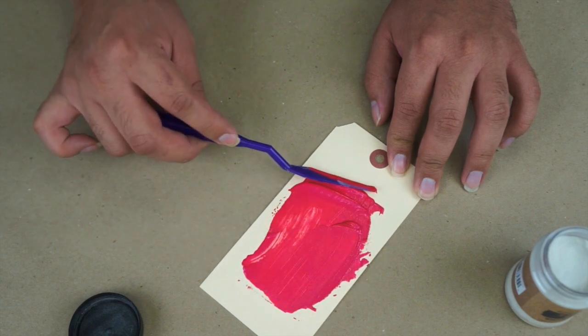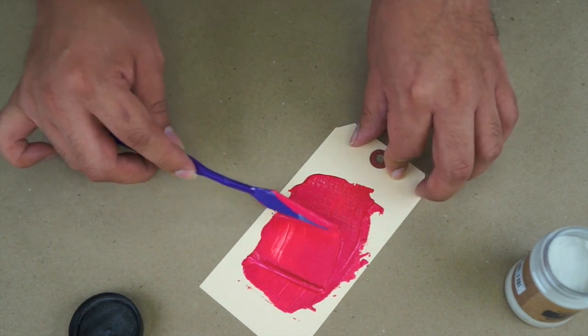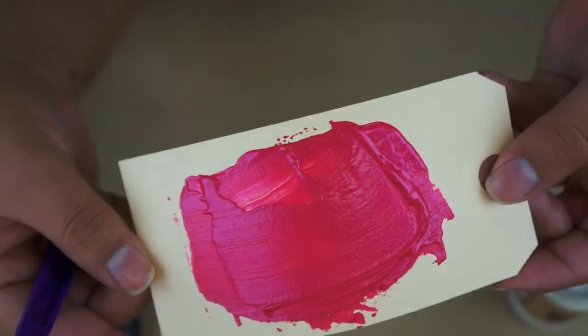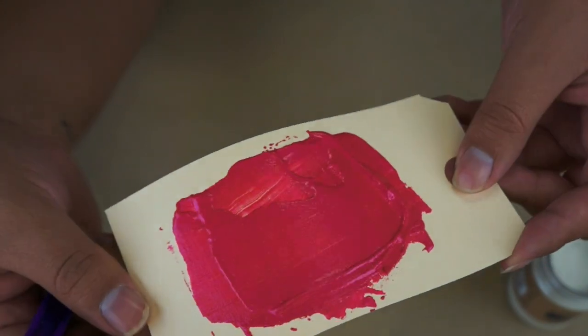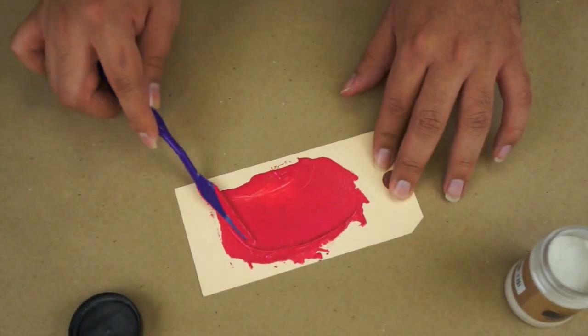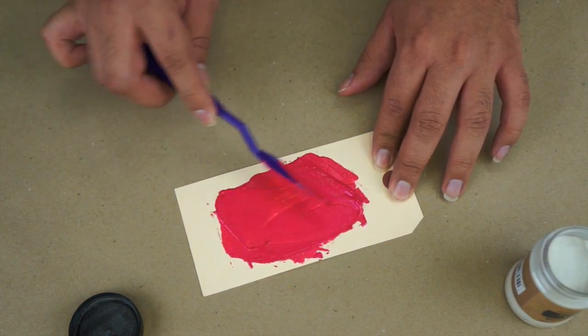And just to give you a visual of what that looks like, I'm going to give you a little bit of a close-up here. You can see that it's now more texturized and less liquid. You can see the grain in there, and you can create different textures with it.